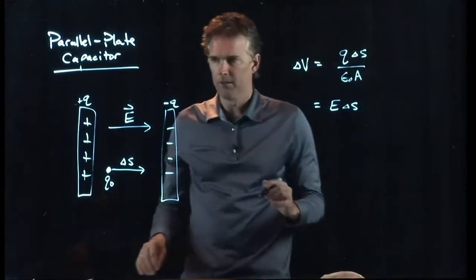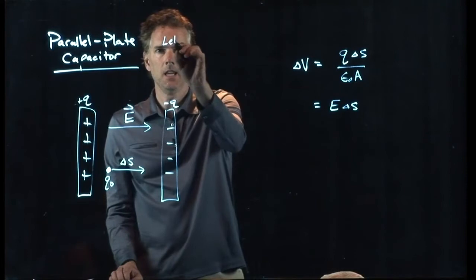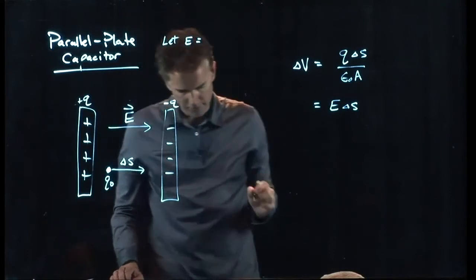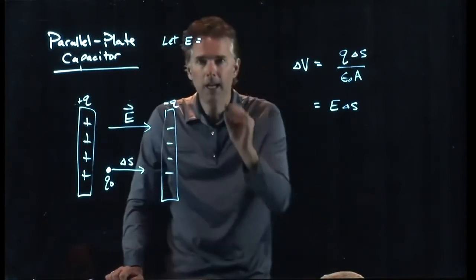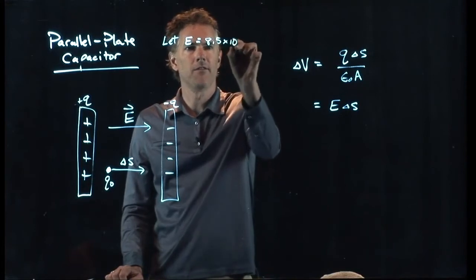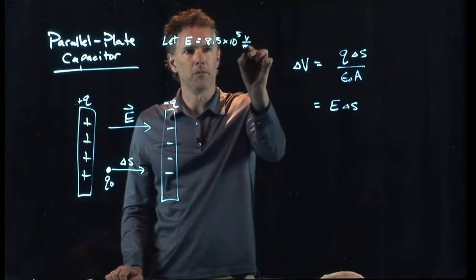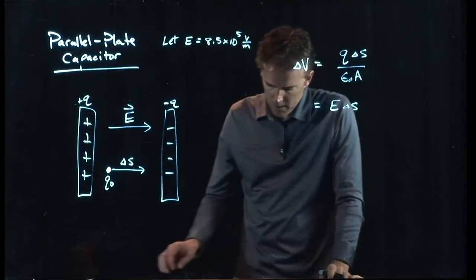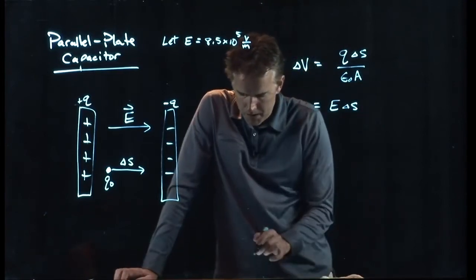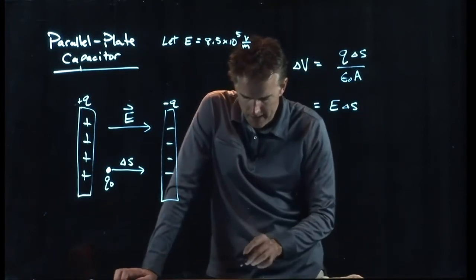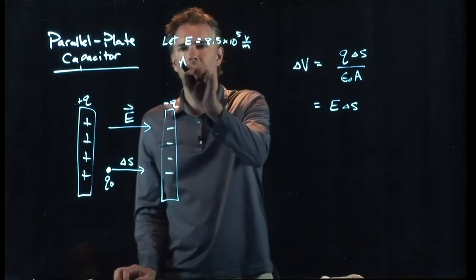It says, let E have a strength of 8.5 times 10 to the 5 volts per meter. It's desired between two parallel plates, each of area 45 square centimeters.